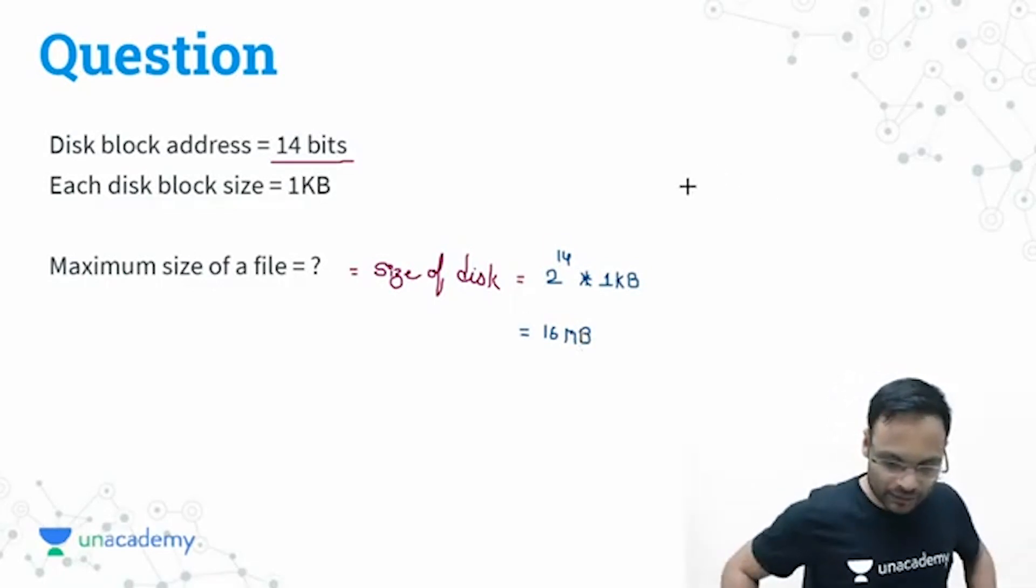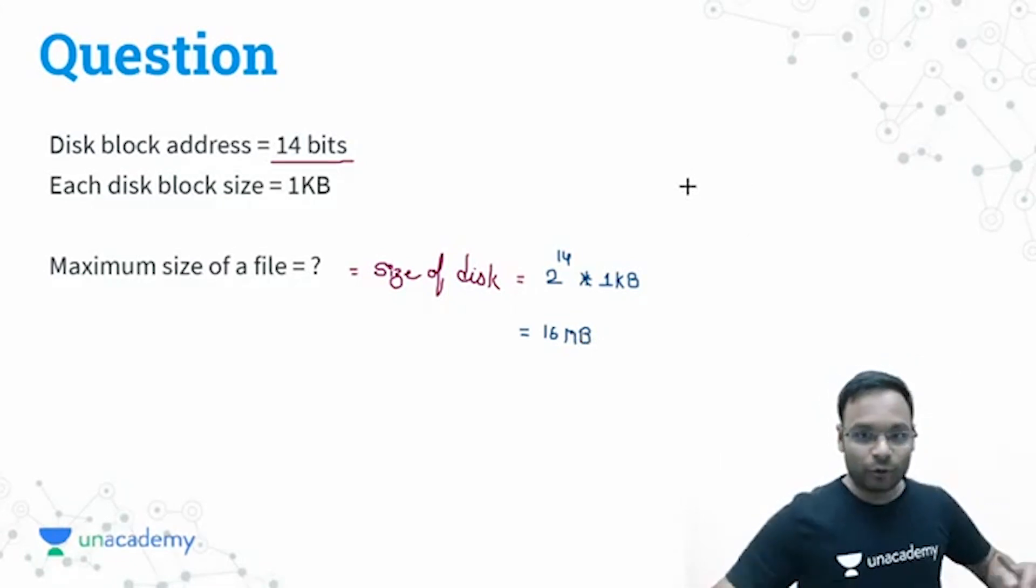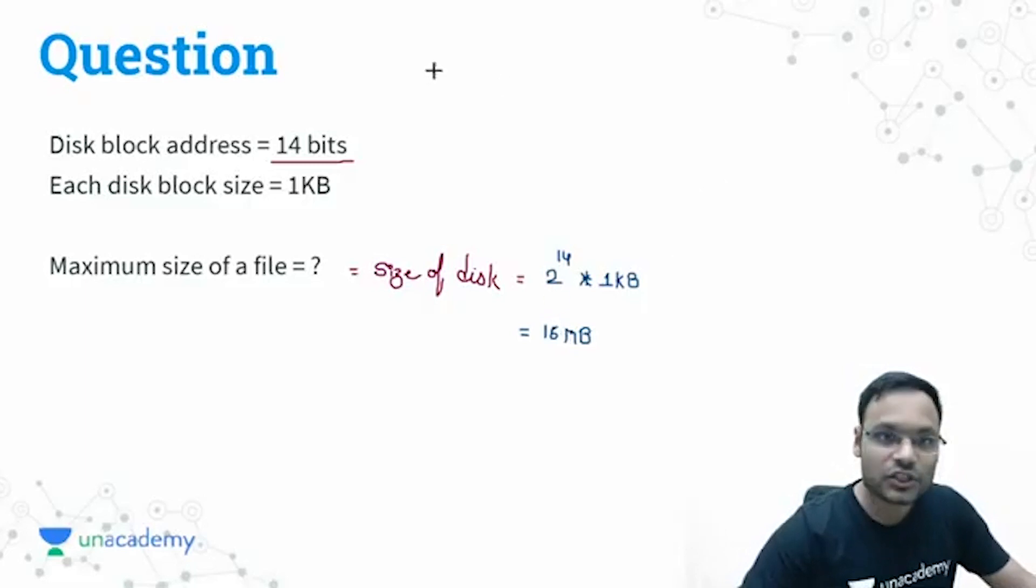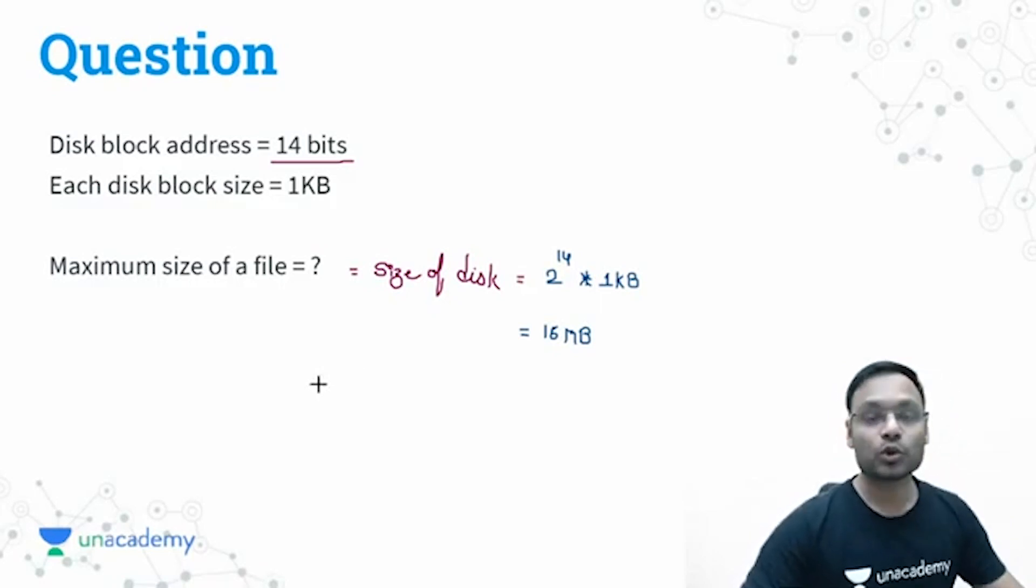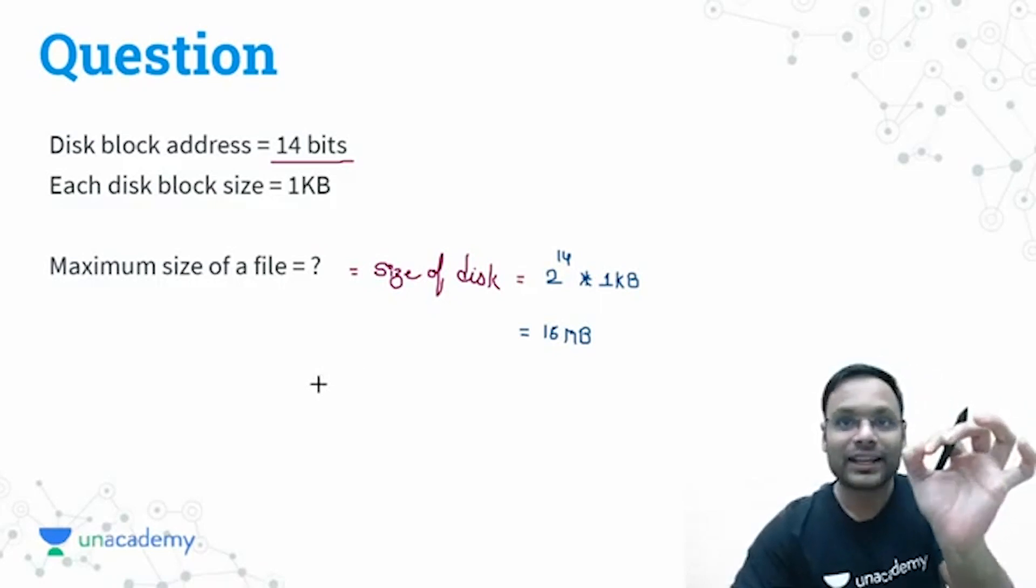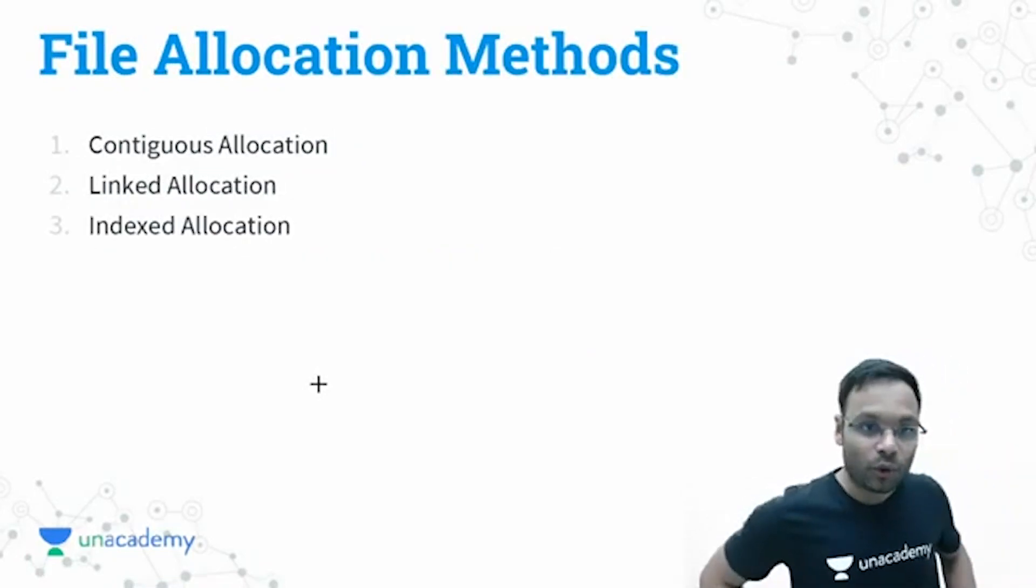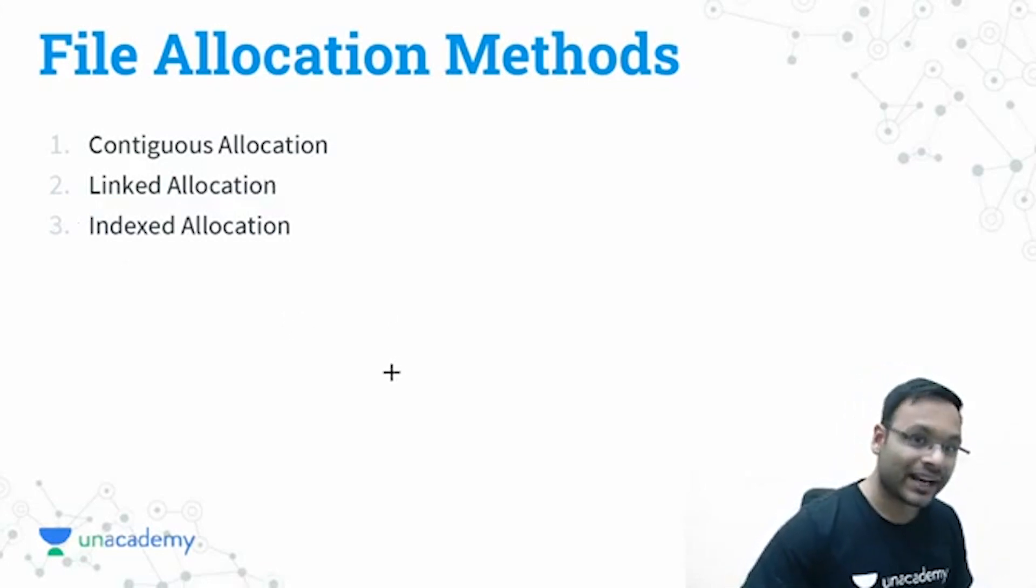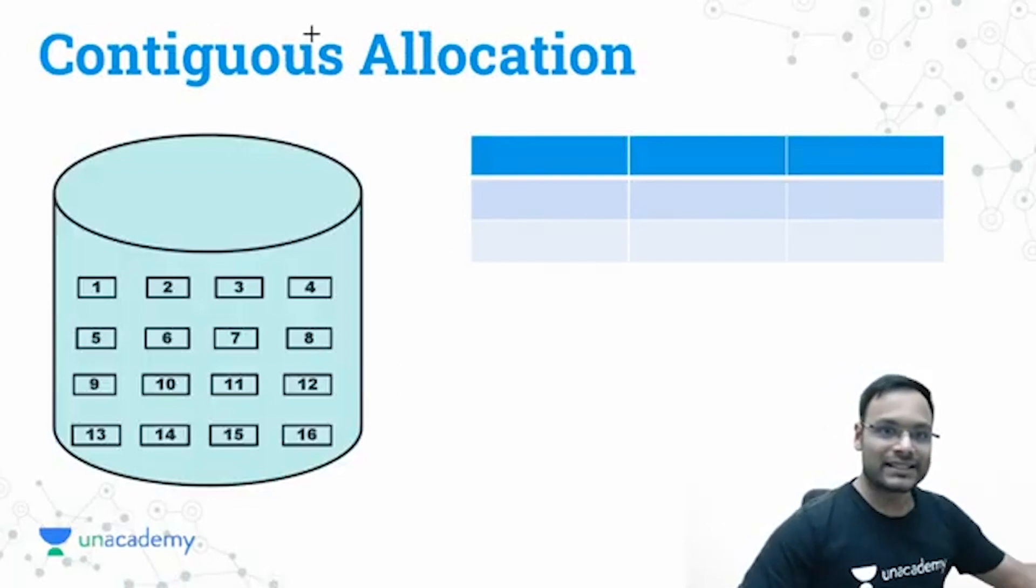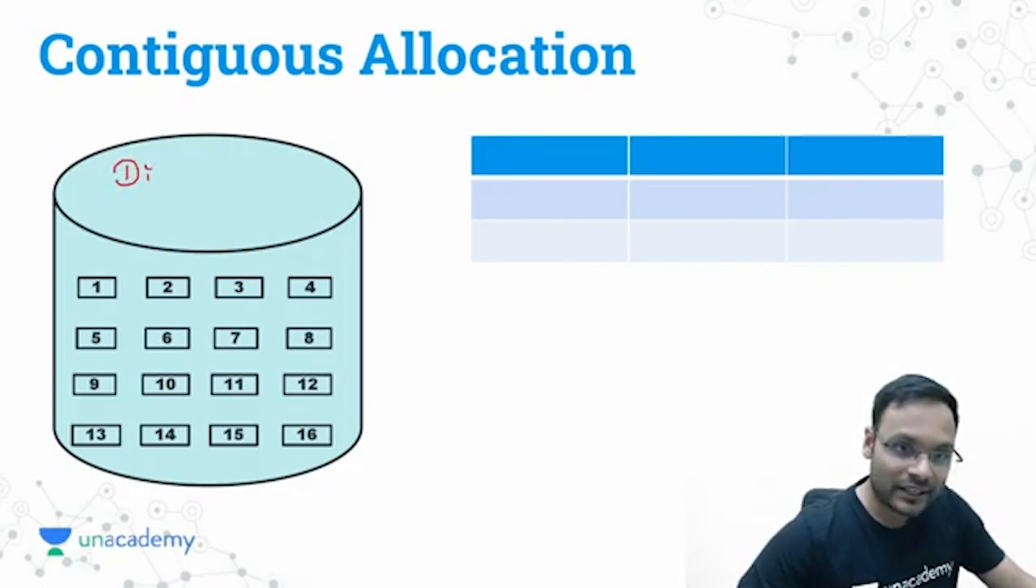Now let's talk about what kind of blocks and how those blocks are chosen to store a particular file. There are three types of file allocation method: the first one is contiguous allocation, second is linked allocation, third one is indexed allocation. What is contiguous allocation? Before that, we will have to assume certain circumstances.